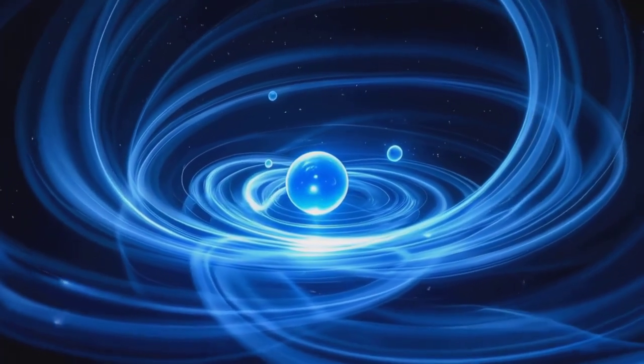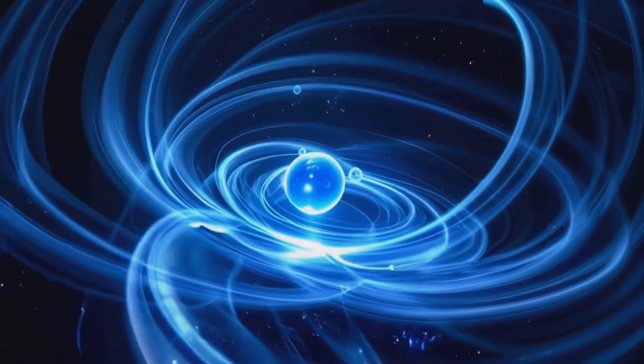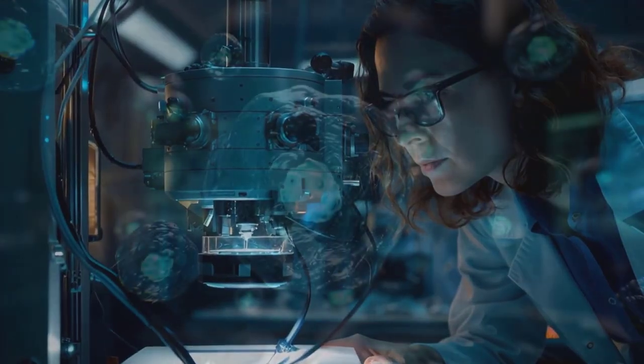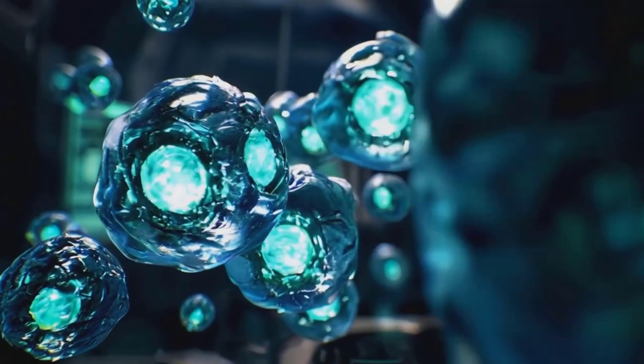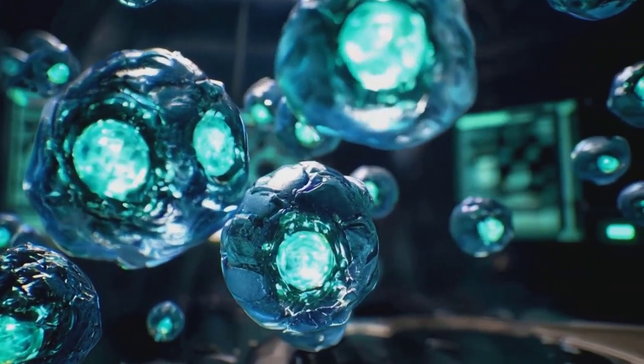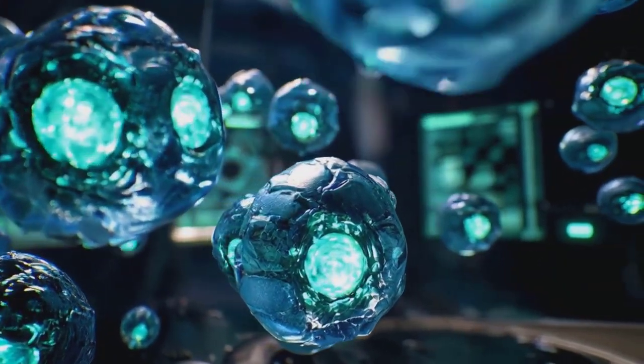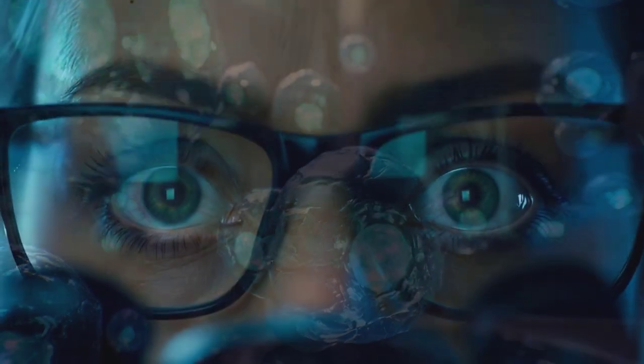Let's zoom in, way in, past the surface of any object, past the molecules, right down to the atoms. What do we see? A tiny nucleus surrounded by electrons with a whole lot of empty space in between. It's like a miniature solar system, but instead of planets, we've got electrons zooming around in a vast emptiness.